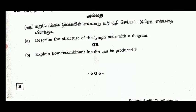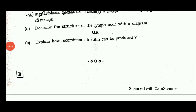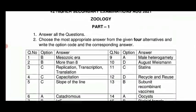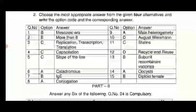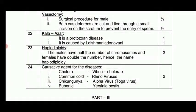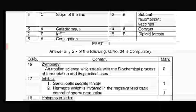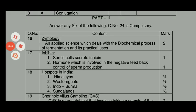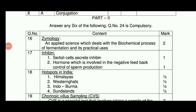So it's 12th Standard Pure Science, plus 2 Zoology, public exam, official model B-type question paper. The answer key is in the description. The answer key has mark alignment. A-type and B-type answer keys. 24 compulsory questions. Causative agents for disease: cholera — Vibrio cholerae. Rhinovirus. Chikungunya — Alpha virus, that is Togavirus. Compulsory questions.